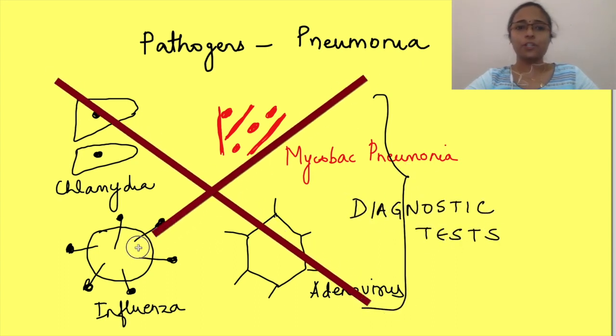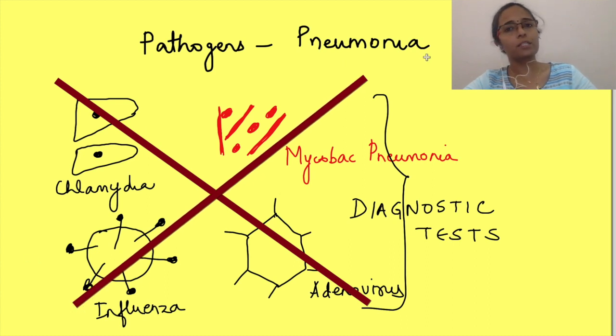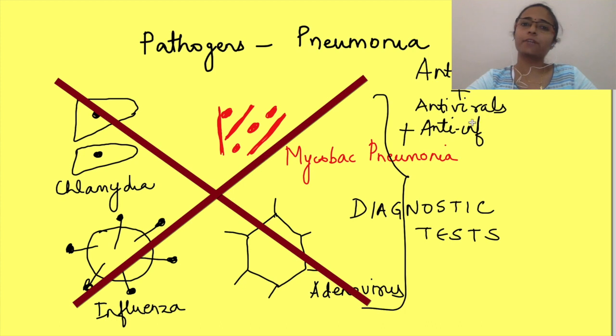But the physicians could not find the cause so they started empirical treatment to combat bacteria, virus and inflammation all together by giving the patient a combination of antibiotics, antivirals and anti-inflammatory drugs. However, the condition of the patient did not improve and he was transferred to ICU.